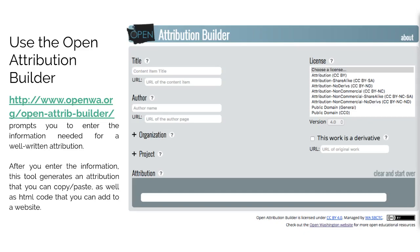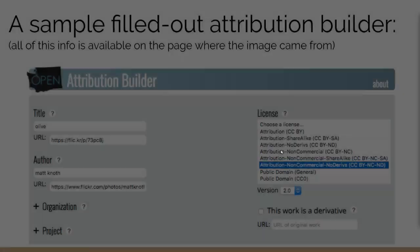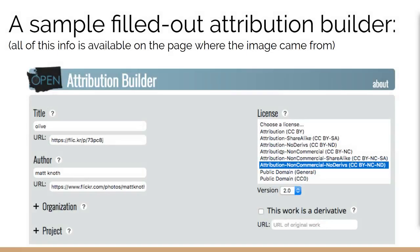Here we fill in the form with the necessary information for writing attribution. Once this process of filling in information is finished, this tool generates an attribution that can be copied by copy-paste, as well as an HTML code that can be added to a website.